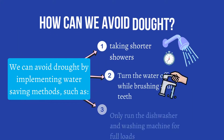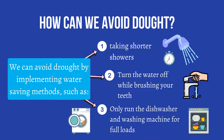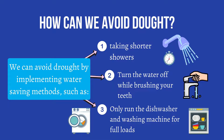How can we avoid drought? We can avoid drought by implementing water-saving methods, such as taking shorter showers, turning the water off while brushing your teeth, and only running the dishwasher and washing machine for full loads.